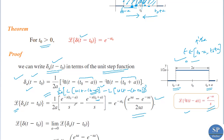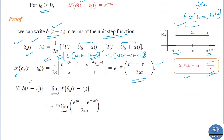Since the Dirac delta function is the limiting case of the unit impulse function, its Laplace transform is the limit as a → 0 of L{δₐ(t − t₀)}. So L{δ(t − t₀)} = lim(a→0) e^(−st₀) · (e^(sa) − e^(−sa)) / (2sa). Here e^(−st₀) can be taken outside the limit since the limit is with respect to a.